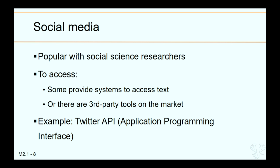Social media platforms are an additional source for text data, and research based on analysis of social media data is getting increasingly popular and useful. Some platforms do have systems that allow access to some data — Twitter, in particular, has an API. There are also third-party tools available, such as Crimson Hexagon at Illinois, that allow researchers to plug in and get data. The ability to get at social media data is constantly evolving.